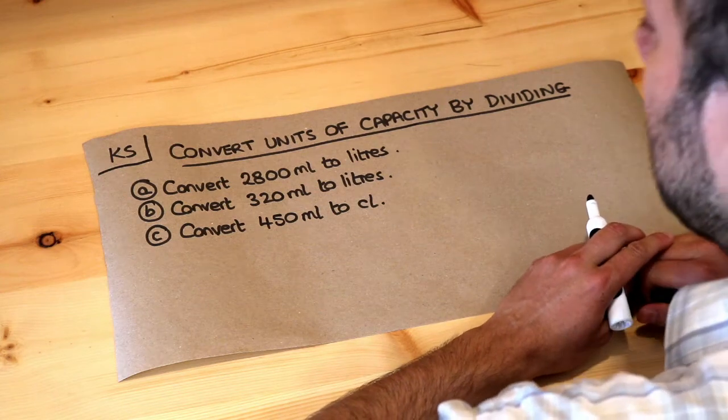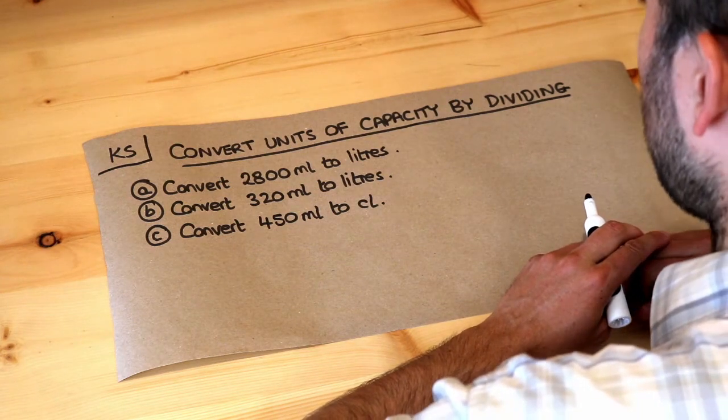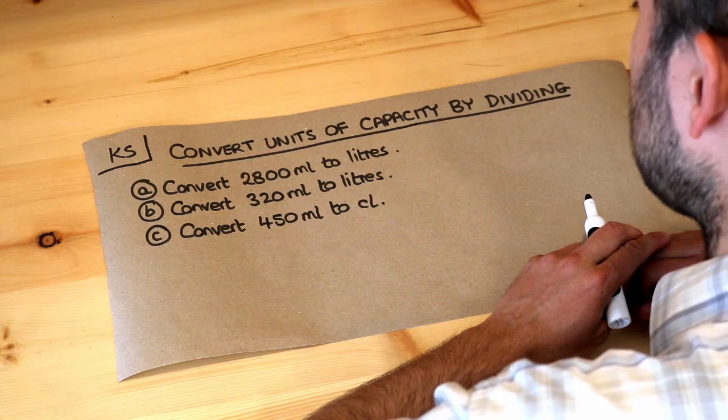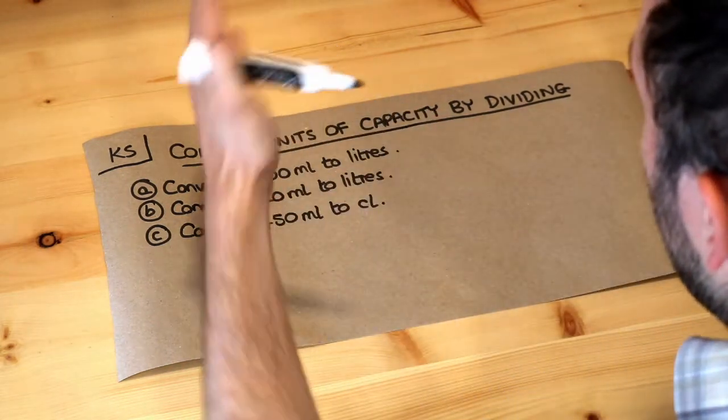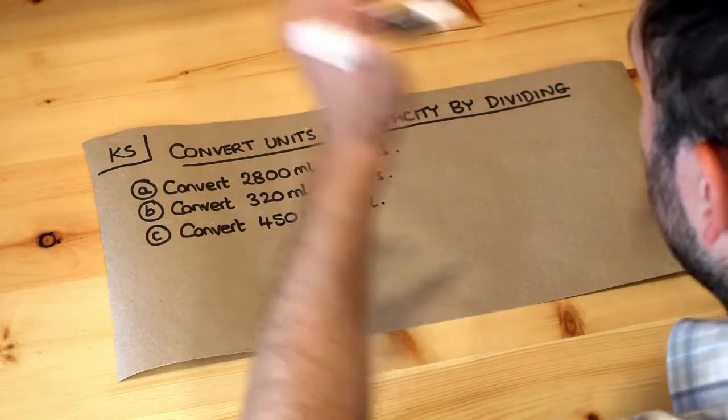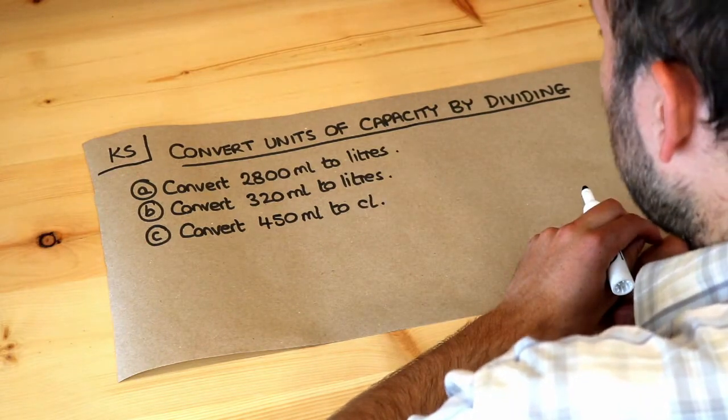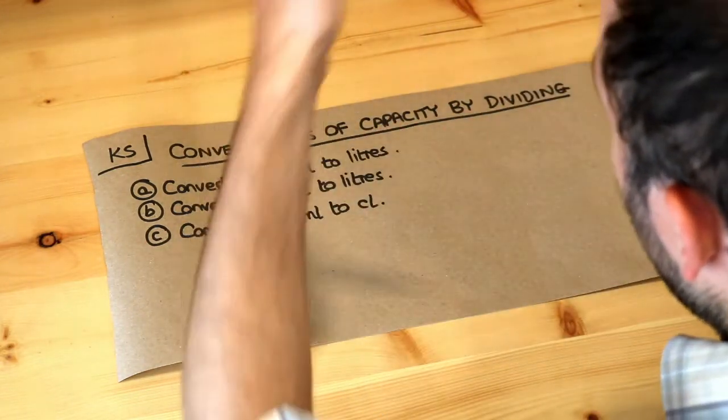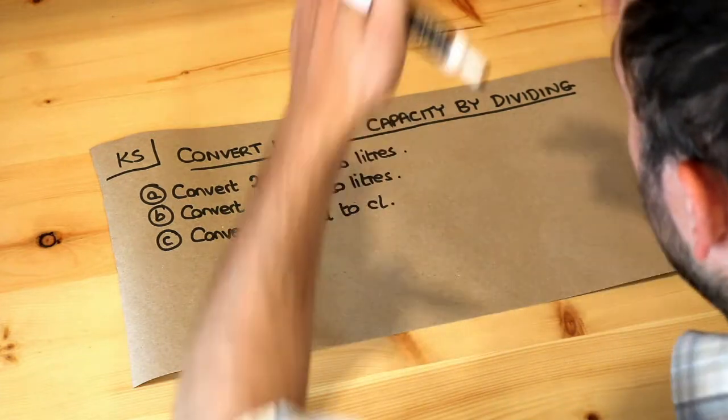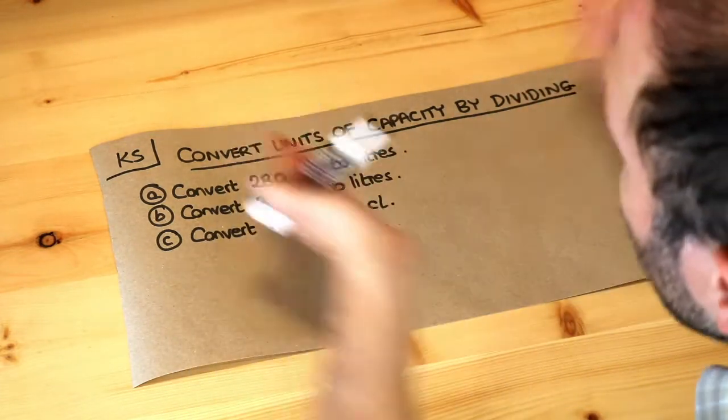Hello and welcome to this Dr Ross Maths key skill video on converting units of capacity by dividing. Now capacity is just how much space something takes up in 3D. So it might be the capacity of a vase, for example. The capacity of a vase just means how much water could it contain.